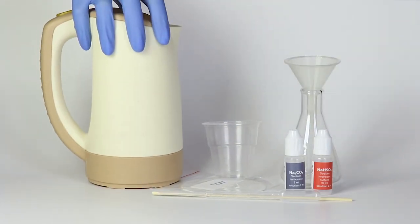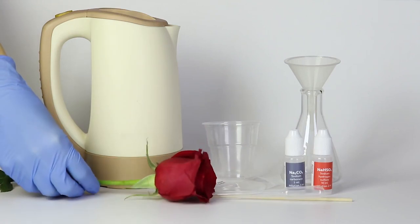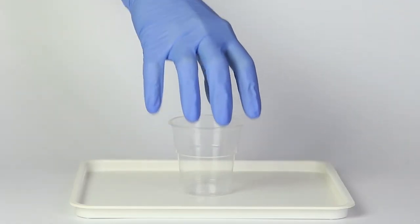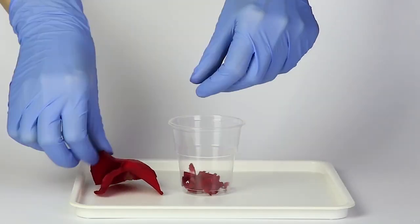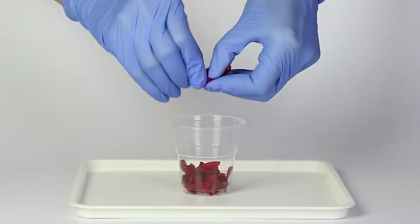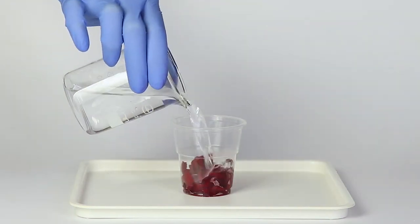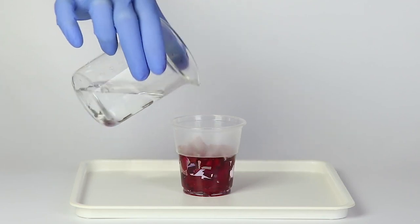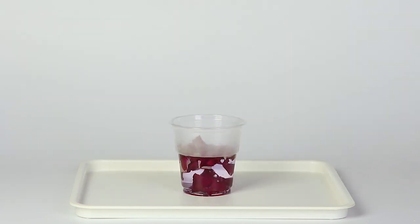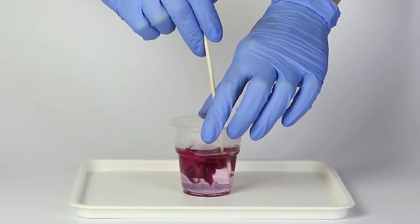Also, prepare some hot water and a red rose. Tear up some petals and put them in the disposable cup. Add enough hot water to completely immerse the petals and stir the mixture with a wooden stick.